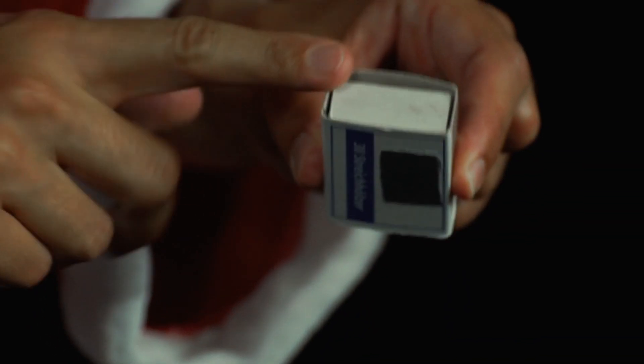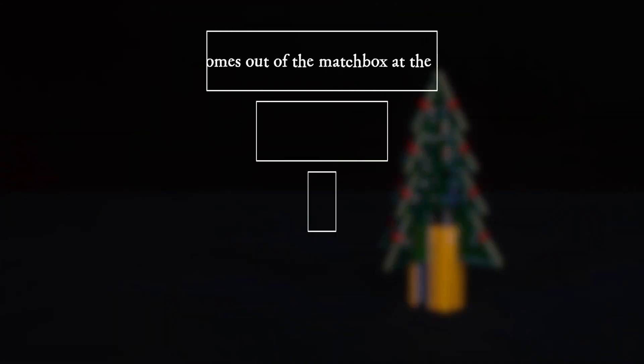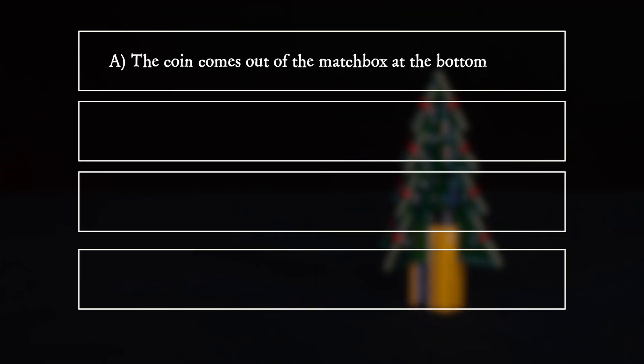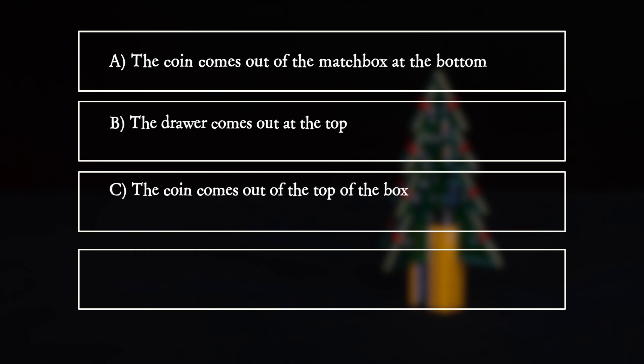What happens? A) The coin comes out of the matchbox at the bottom. B) The drawer comes out at the top. C) The coin comes out of the top of the box. D) The drawer comes out of the bottom of the box.